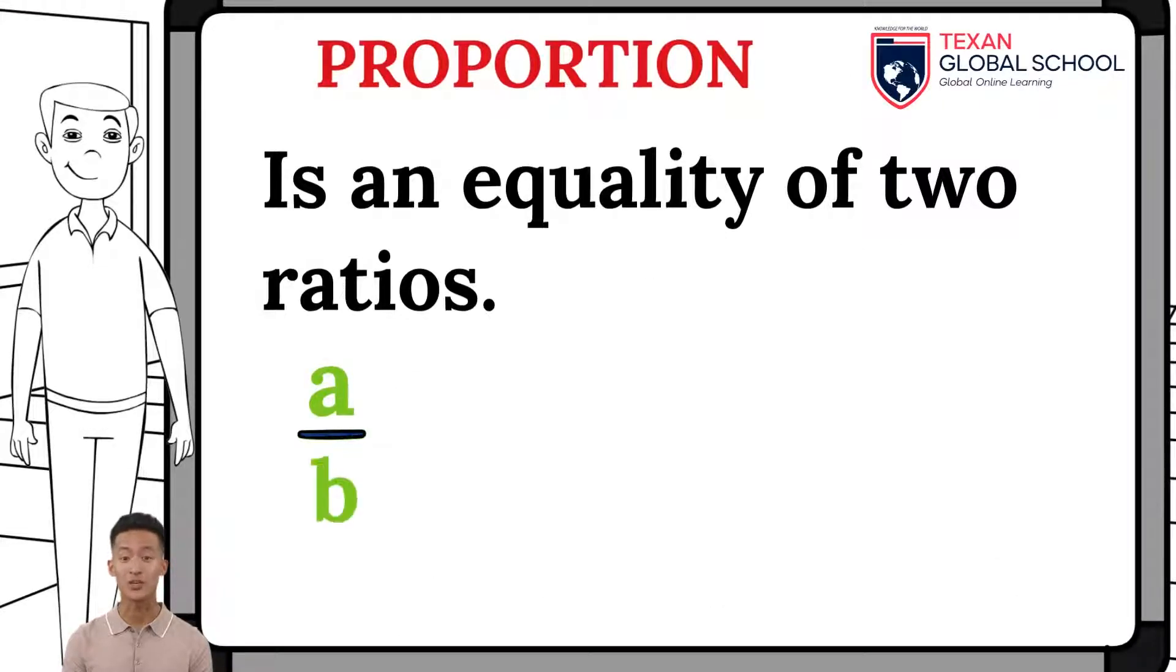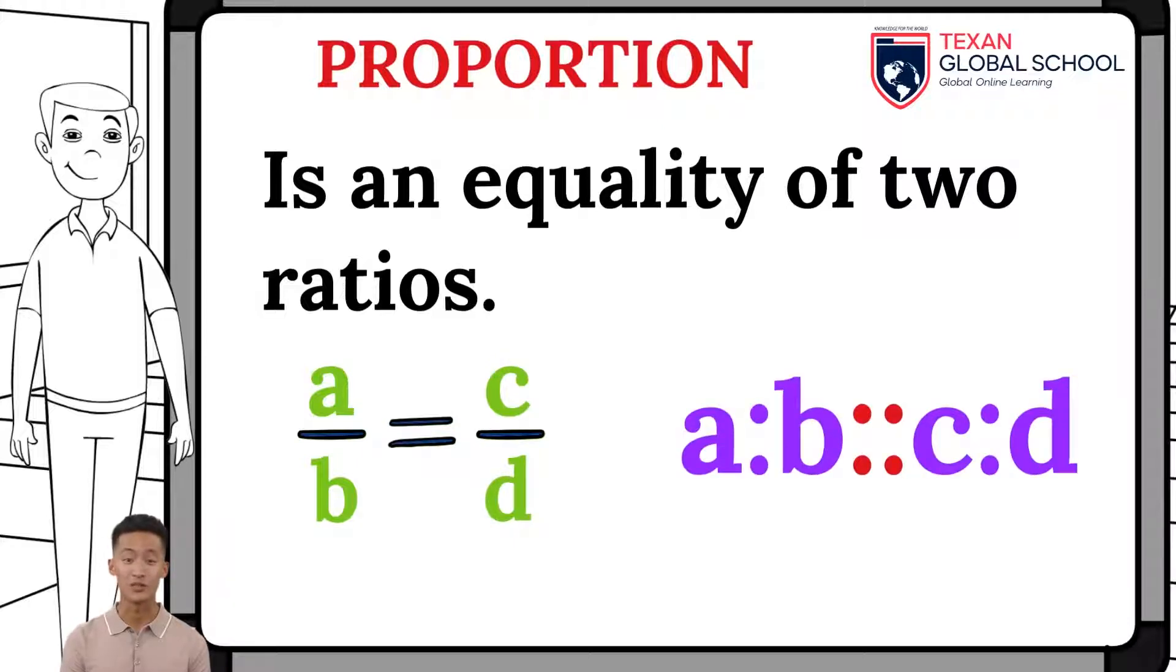On the other hand, a proportion is the equality of two ratios. The representations with the equality or the dots are shown on the board, and it read: A is to B as C is to D.